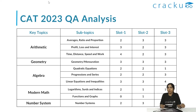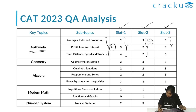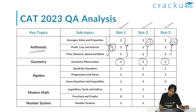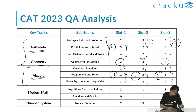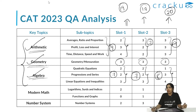Let's look at CAT 2023 Quant section-wise weightage. In arithmetic: slot 1 had nine questions, slot 2 had seven, and slot 3 had twelve. In geometry: three questions each in all three slots. In algebra: seven questions in slot 1, seven in slot 2, and eight in slot 3. So from arithmetic, geometry, and algebra combined, we got 19 questions in slot 1, 17 in slot 2, and 20 in slot 3. It is highly advisable not to miss any topics from arithmetic, geometry, and algebra.